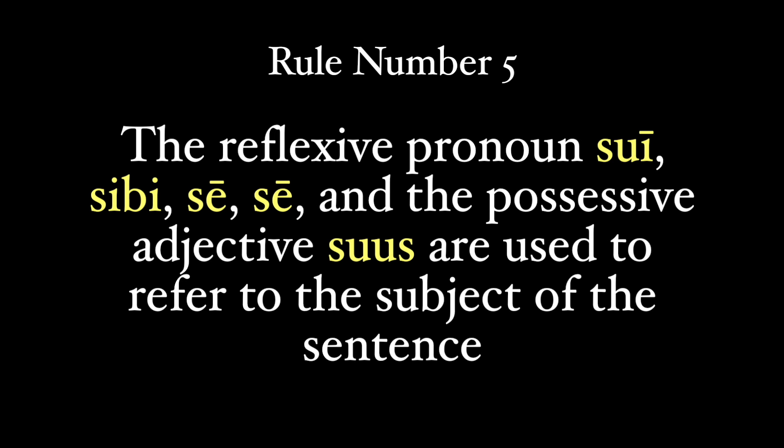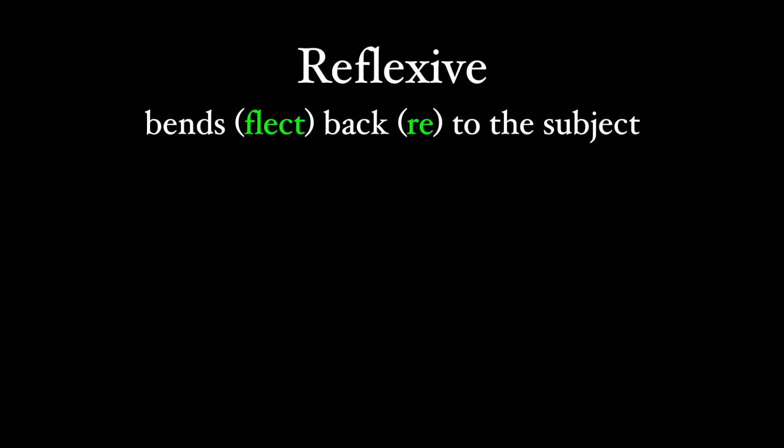Rule number five: the reflexive pronoun sui, sibi, se/sese, and the possessive adjective suus are used to refer to the subject of the sentence. A reflexive pronoun is one that bends back to the subject, meaning that it refers to the same thing as the subject.